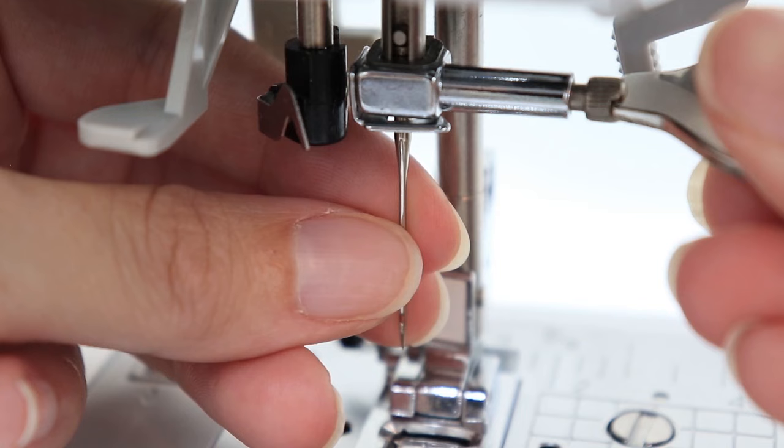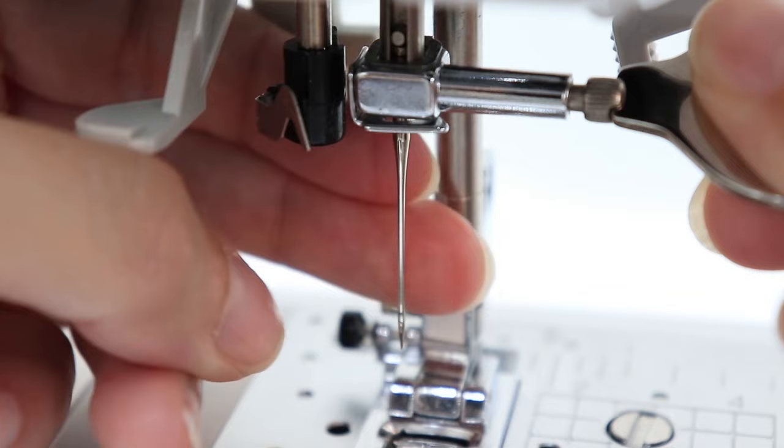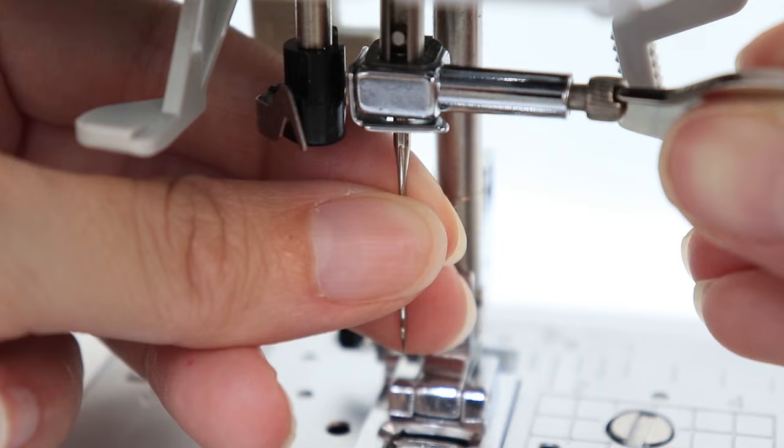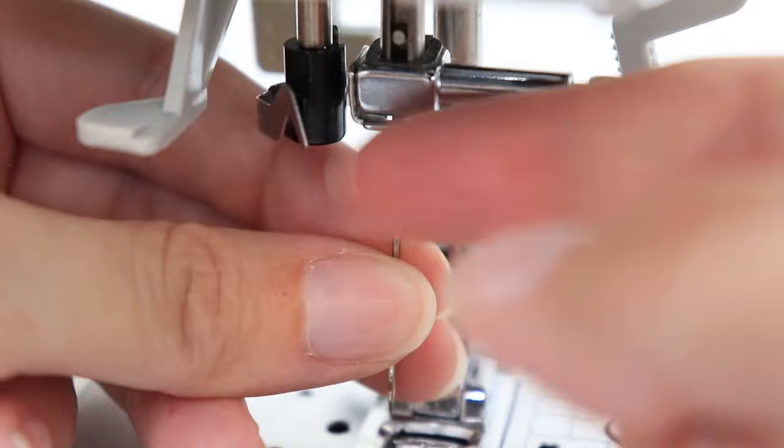I'm just going to set my screwdriver in the groove and turn it slowly towards me. You don't want to take out the screw all the way. You want to turn it just enough that the needle becomes loose. So feel with your left hand and slowly turn it towards you. And once you feel it give way, gently pull it out.